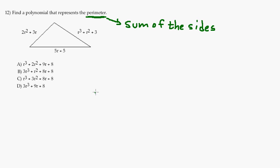We have our first side, which is 2r squared plus 3r. And then we have our second side, which is 5r plus 5. It doesn't matter what order these are in. And then the other side is r to the third plus r squared plus 3.